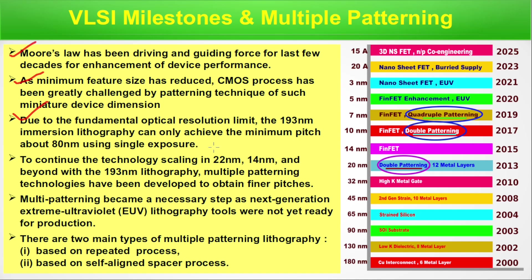If that is the challenge, there could be two solutions: either some alternative technology has to be introduced to pattern devices at feature sizes of 22 nanometer and 14 nanometer with that 193 nanometer lithography, or the light source must have a different wavelength. To continue technology scaling at 22 nanometer, 14 nanometer and beyond with 193 nanometer lithography, multiple patterning technologies have been developed to obtain finer pitches, because a tool with an alternative light source was not available for production. Multi-patterning became a necessary step as next-generation extreme ultraviolet lithography tools were not yet ready for production. Multiple patterning is that alternative technology.